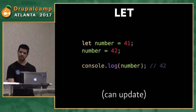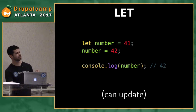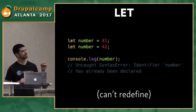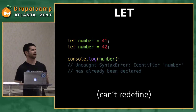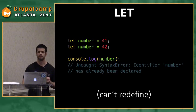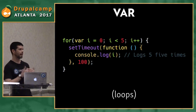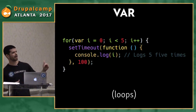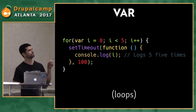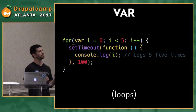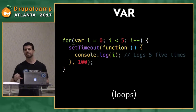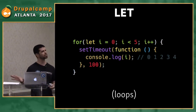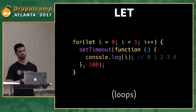Const and let solve that problem. With let, you can update it like var — set it to 41 then update to 42, you get 42. But you can't redefine it: if you do 'let number' and then 'let number' again, you get a syntax error: 'Identifier number has already been declared.' Let is also great for loops. With a setTimeout loop using var, you'll get 5 printed five times in a row because the loop runs before the timeout fires. But with let, which is block-scoped, you get the expected 0, 1, 2, 3, 4.